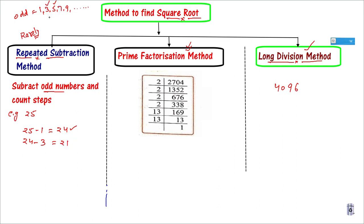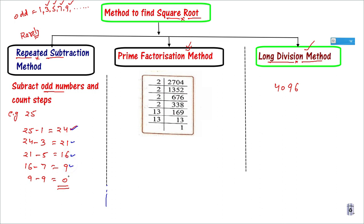The next odd number is 9 itself. So from 9, I subtract 9. When you get 0, you stop. Now you count the number of steps: 1, 2, 3, 4, 5 — there are 5 steps. So the answer is 5. This means the Square Root of 25 is 5. The problem with this method is that for a big number you will fill 2 or 3 pages. So this is not a good method. I will never use this because it has so many limitations.